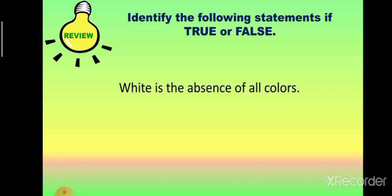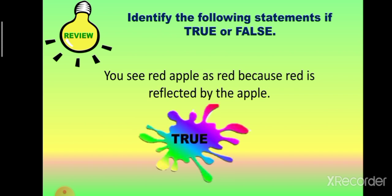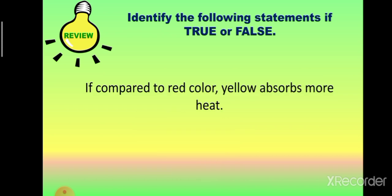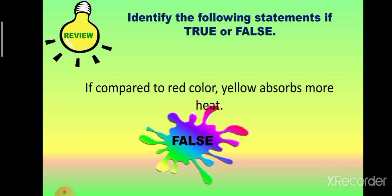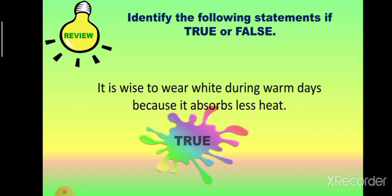In this activity, you will identify the following statements if it is true or false. Number one: white is the absence of all colors. The answer is true. Next: a red apple appears red because red is reflected by the apple. The answer is true. If compared to red color, yellow absorbs more heat. The answer is false. Dark colors absorb more heat compared to light colors. It is wise to wear white during warm days because it absorbs less heat. The correct answer is true.